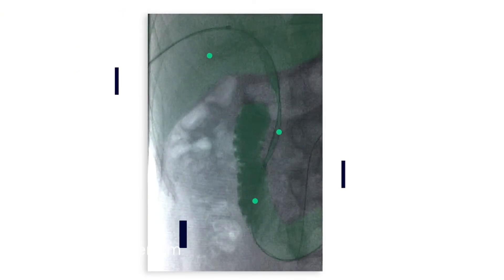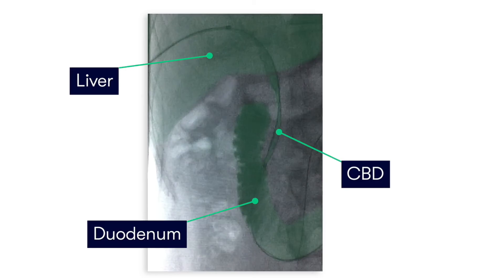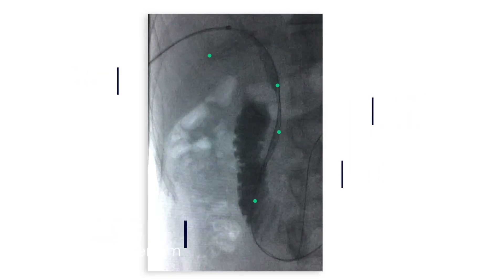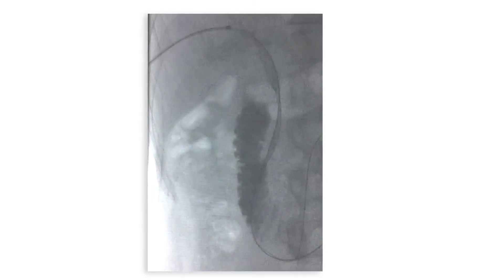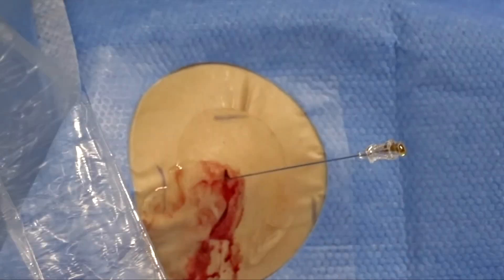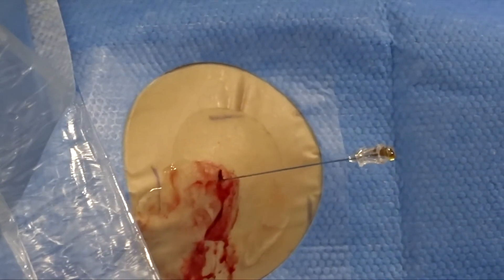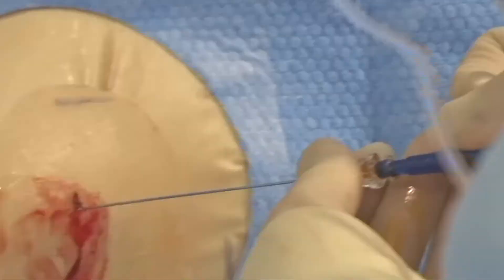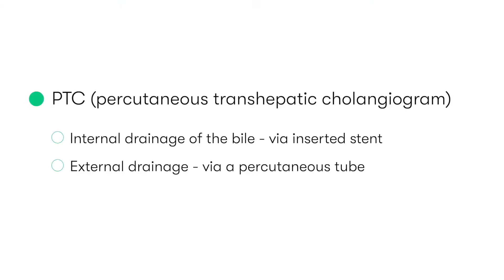In some cases, during the PTC, a stent may be inserted into the bile duct, and this allows the bile to drain beyond the obstruction. However, in other cases, bile may be drained externally via a percutaneous tube and collected in a drainage bag that sits outside the patient's body.